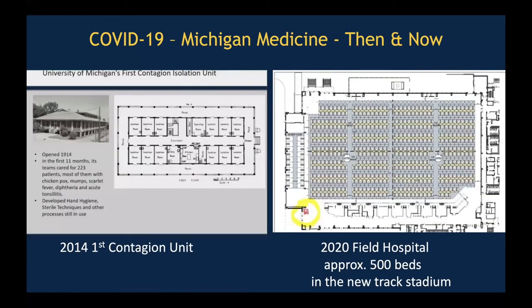At the University of Michigan, we are about to deploy a field hospital — a 2020 field hospital with approximately 500 beds on our athletic campus at our new track stadium. And if we look back to 1914, there were contagion units in the early 1900s across the country. Many of the things today about hand hygiene, sterile techniques, and other processes developed during the earlier contagion events in the 19th century are still in use today.